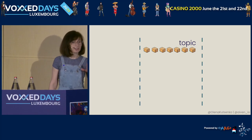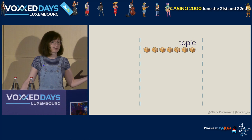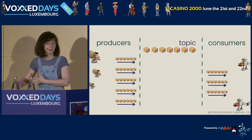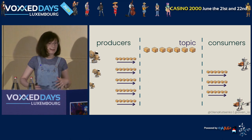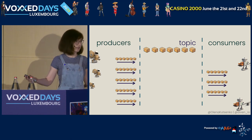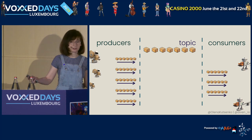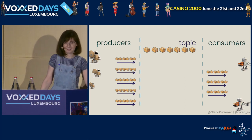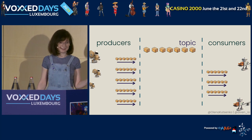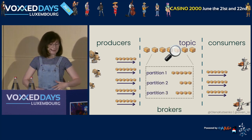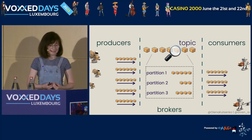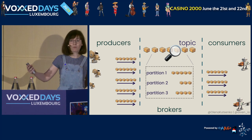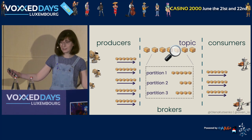Data to a topic is pushed by some producers and later it is pulled by some consumers. A topic itself is actually an abstract term, because technically, on the disks, we store data in partitions. Partitioning is a mechanism to distribute the topic data across multiple brokers in the cluster.